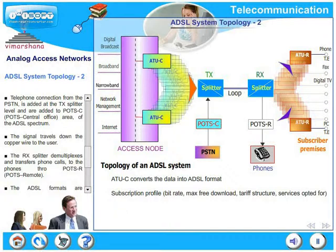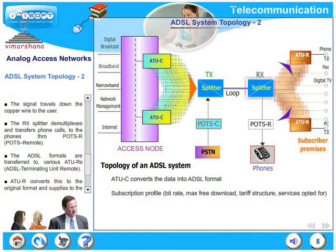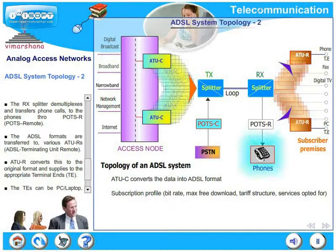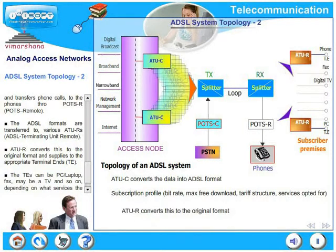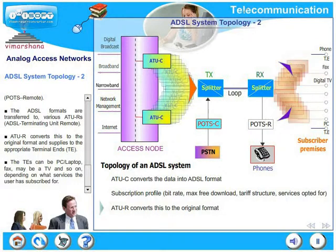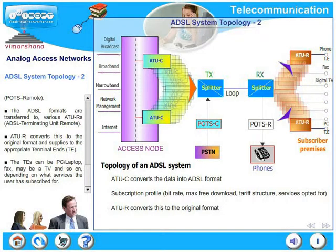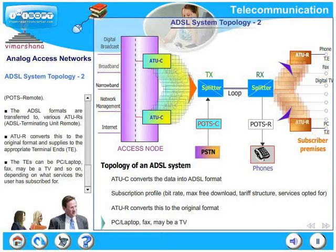The receiver splitter demultiplexes and transfers phone calls to the phones through parts R, that is the remote parts. The ADSL formats are transferred to various ATURs, ADSL Terminating Units Remote. The ATUR in turn converts this to the original format and supplies it to the appropriate terminal. The terminal equipment, or TEs, can be PCs, laptops, fax, or a TV and so on, depending on what services the user has subscribed for.